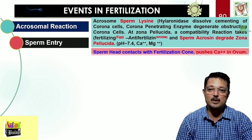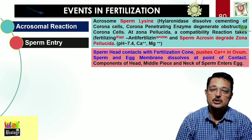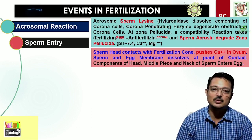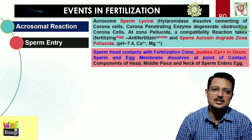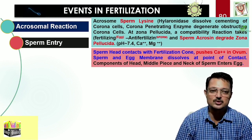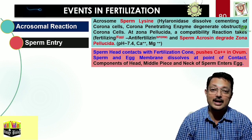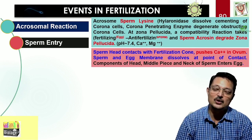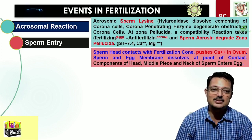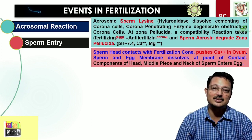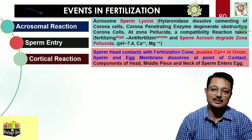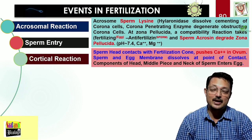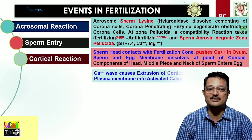Now comes sperm entry. When the sperm head contacts the zona pellucida, it forms a fertilization cone. The sperm pushes calcium ions into the ovum — correctly called the secondary oocyte at this stage — and the membranes of sperm and egg dissolve at the point of contact. The head, middle piece, and neck of the sperm enter the egg. At this stage, the important cortical reaction takes place.